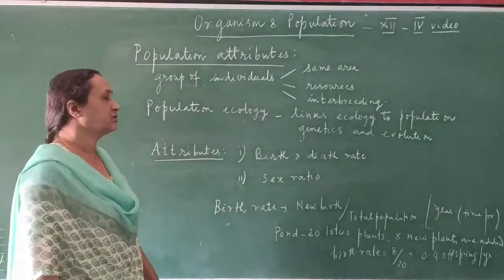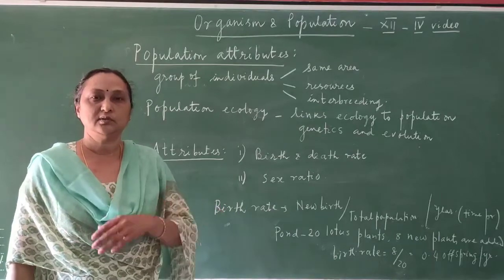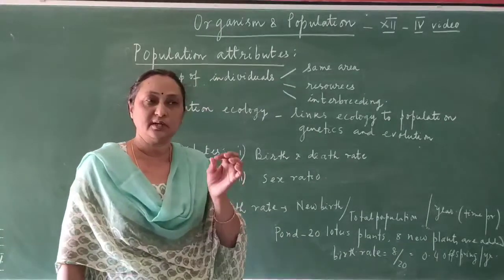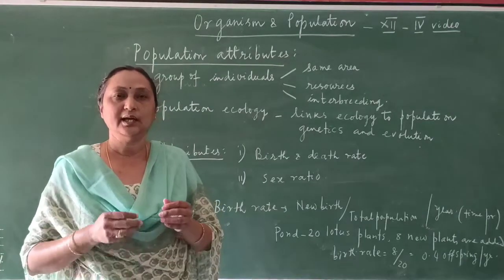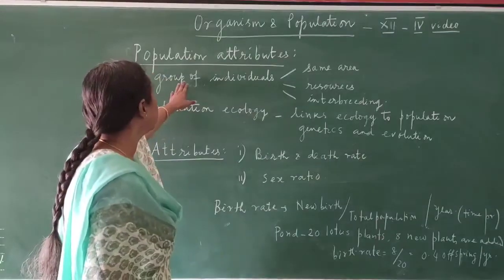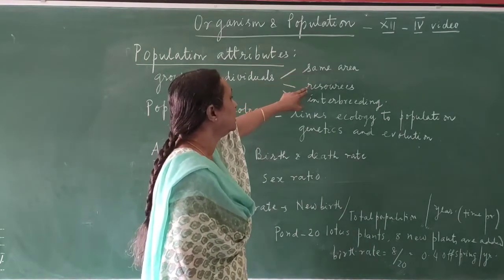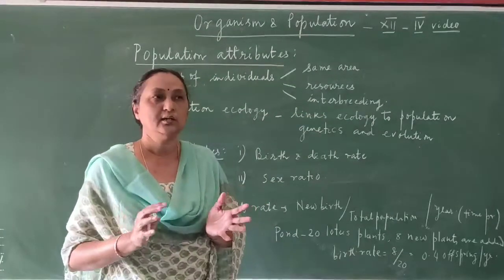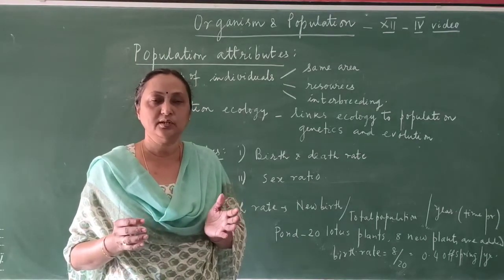Now we will discuss about population attributes. Try to understand what is the meaning of population and what is the meaning of attributes. Population is a group of individuals. When we are talking about a group of individuals we call it a population, and attributes means characters — so what are the characters of a population? The population is a group of individuals found in the same area, using the same resources, and interacting among themselves — crossing or mating takes place between individuals of the same species or different species of that particular area.